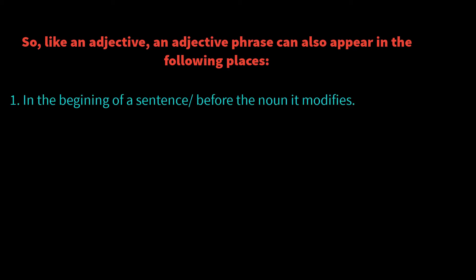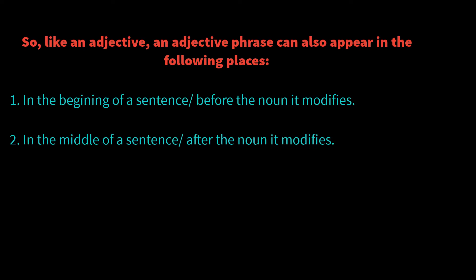The three positions are: number one, in the beginning of the sentence or before the noun it modifies; number two, in the middle of the sentence or just after the noun it modifies; and number three, at the end of the sentence. Let us take some examples. 'Your overly excited friend is dancing' — here 'overly excited' is the adjective phrase coming at the beginning of the sentence.